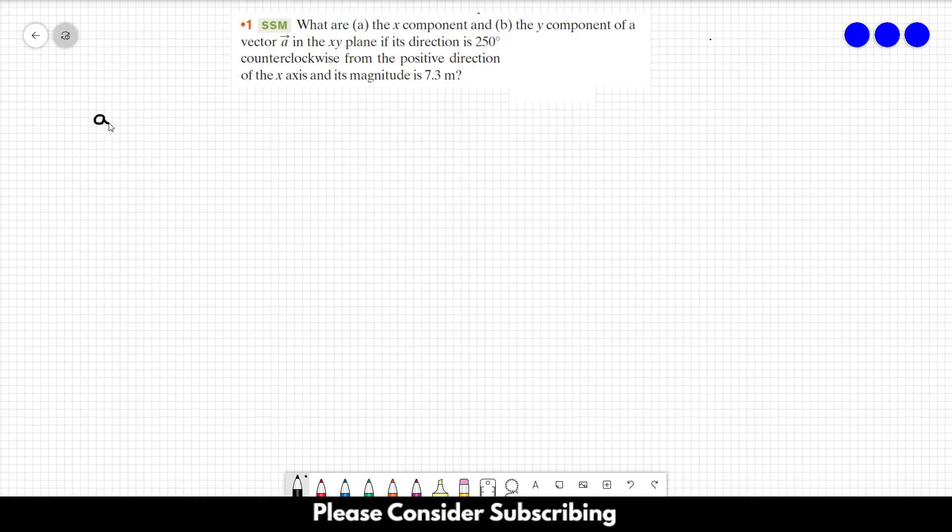So we have a vector A over here and we know that the magnitude of the vector is 7.3 meters. Let's draw our XY plane, so this is X, this is Y, and the vector is something like this, this is our vector A.